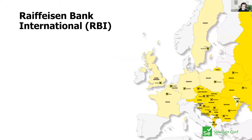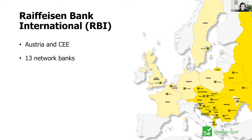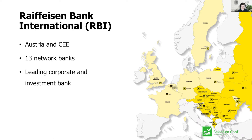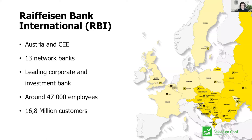For context on where this comes from and why security is so important for us: RBI — Raiffeisen Bank International — is a traditional bank with more than 100 years of history, now fully agile transformed. Headquartered in Austria and operating across central and eastern Europe, we currently have 13 network banks, more than 47,000 employees, and more than 16 million customers.